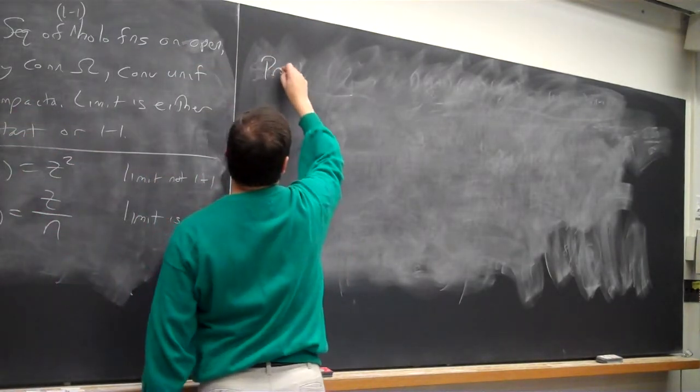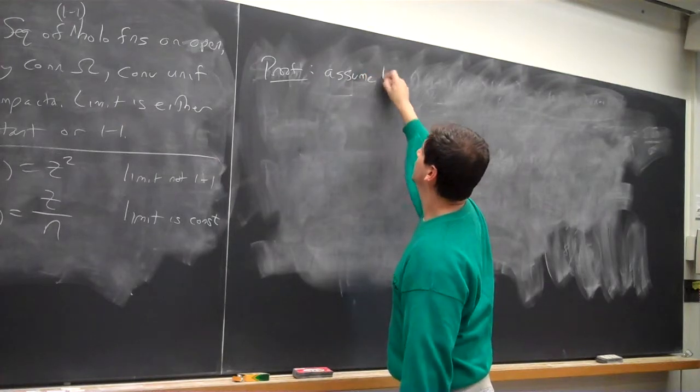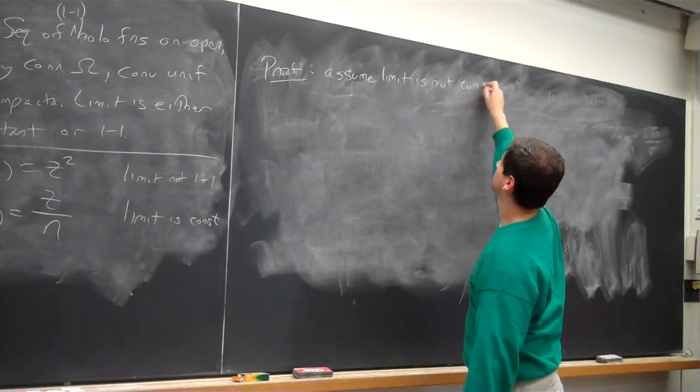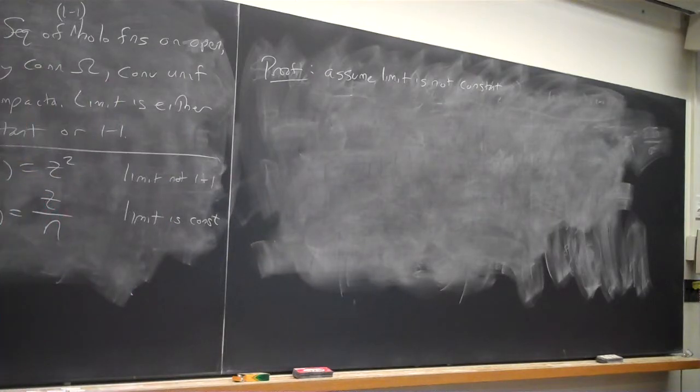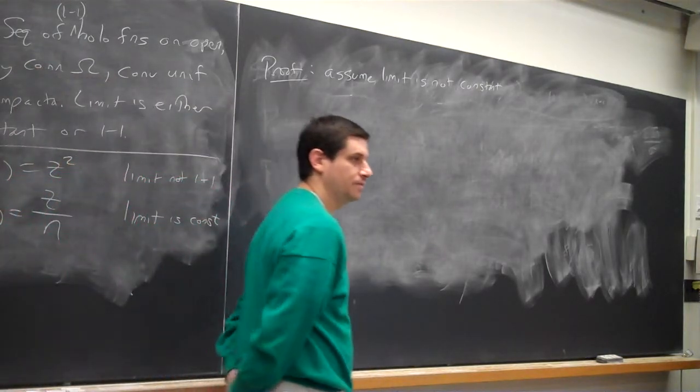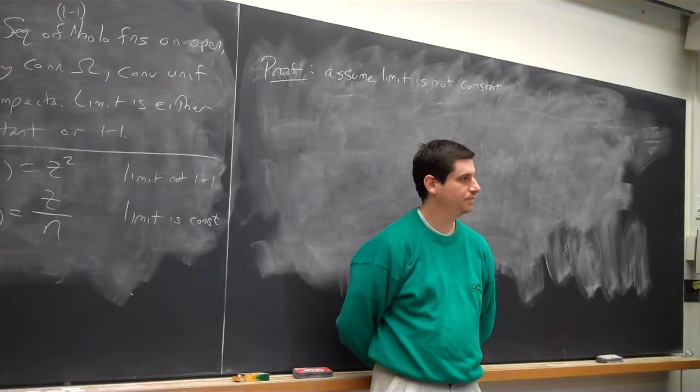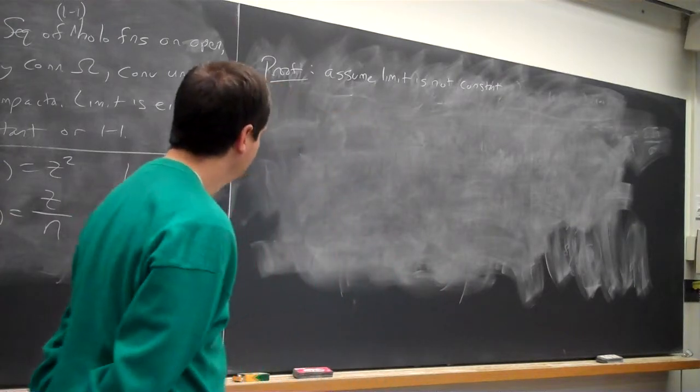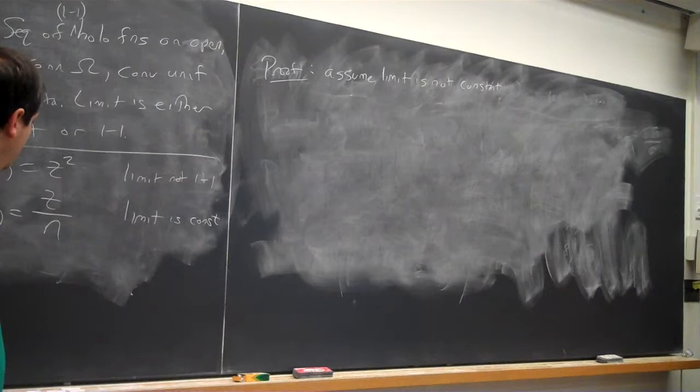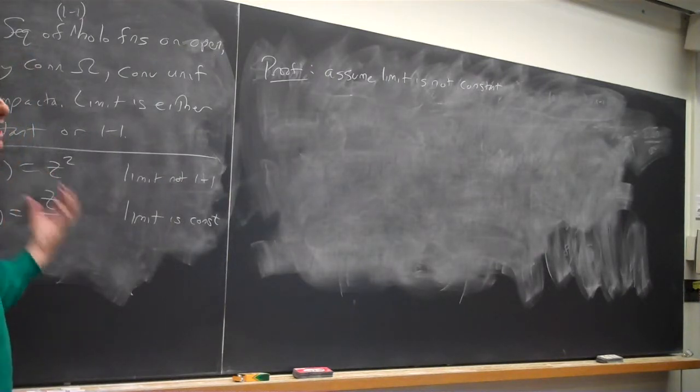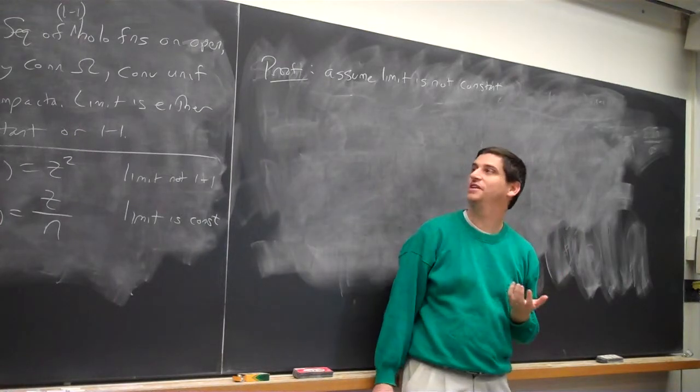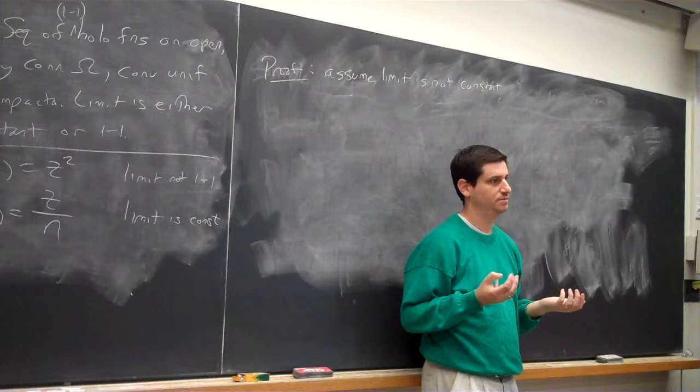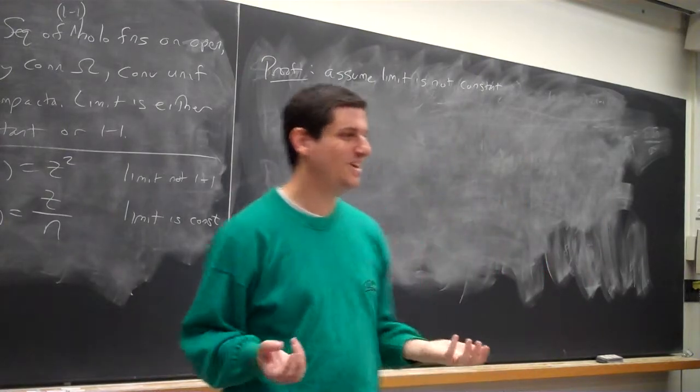Proof. Assume the limit is not constant. Because if the limit is constant, it's pretty easy to show that the limit is either constant or one-to-one. So, what does it mean if the limit is not constant? What can we deduce from this? If I tell you that it's not constant, what do you know? It hits multiple points. So, essentially, that's all we know right now, is it hits multiple points.